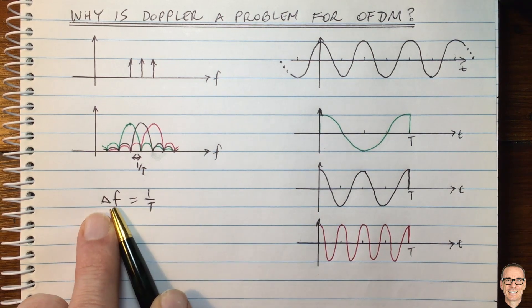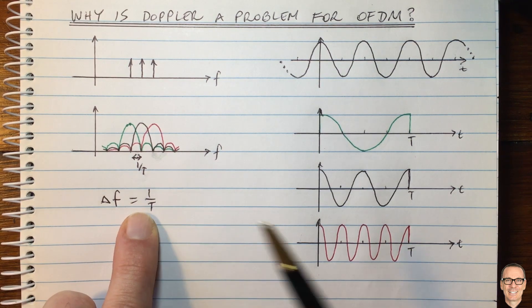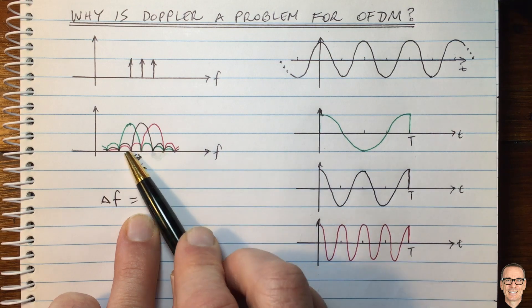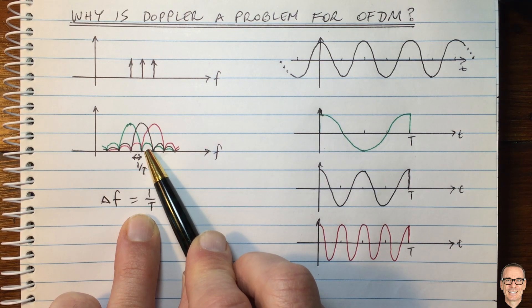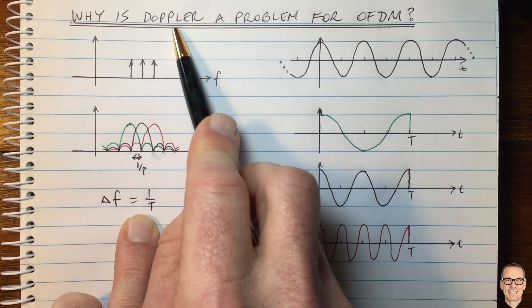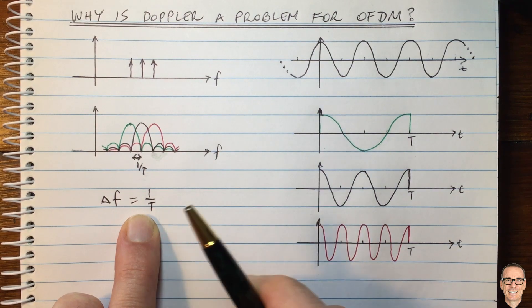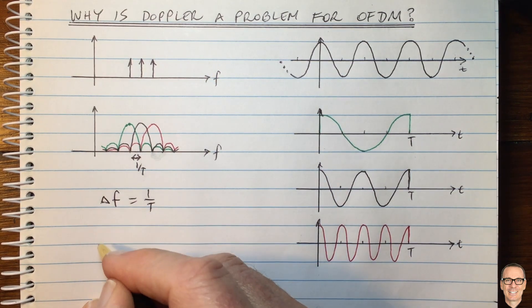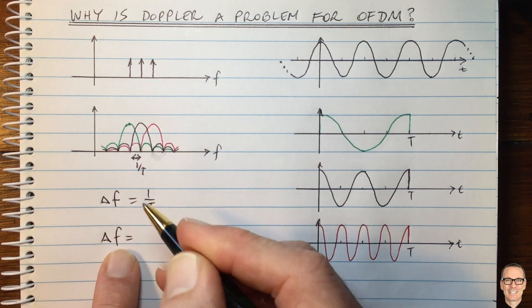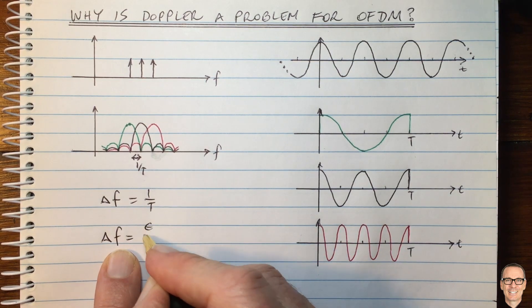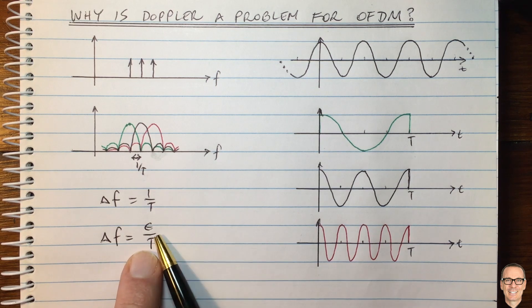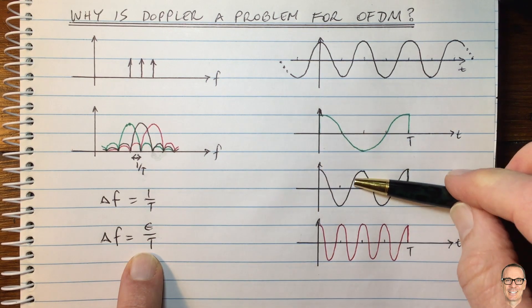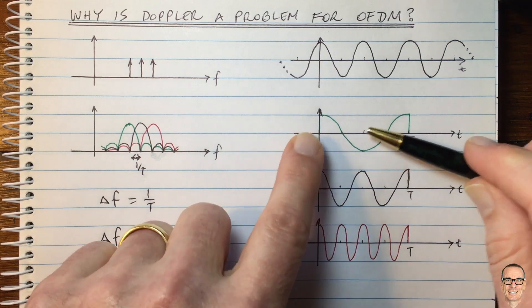After shifting up, it would be the green waveform. Instead of coming on this frequency here, it would now be coming on this frequency here because of a shift in frequency. So if you had exactly Doppler shift of one on T, then you would still have orthogonal outputs. It would just be that they would all be shifted one subcarrier to the right if it's a Doppler shift that's positive. Of course, if it's a negative Doppler shift, it would be one to the left.